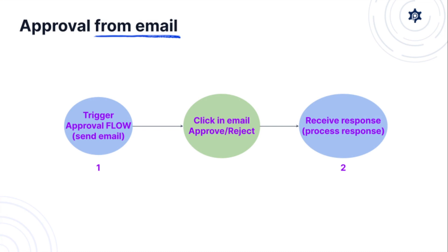To demonstrate this use case in Procesio we're going to build two processes. The first one, which we're calling the trigger, is going to send an email to one person asking that person to approve or reject a certain request. That person is going to click approve or reject, and that will trigger the second process where we capture the data from the person approving or rejecting, process the response, and do other actions if required.